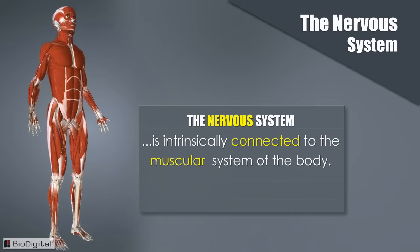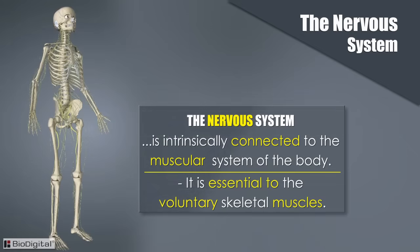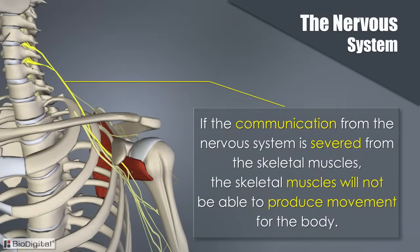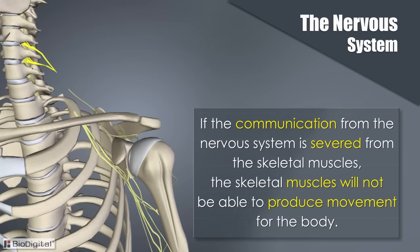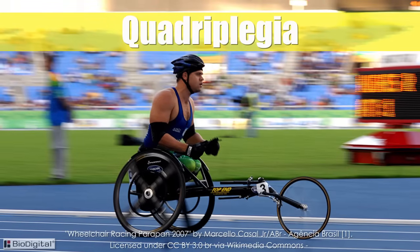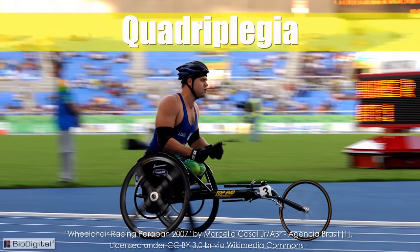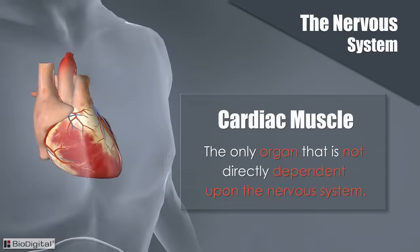While not technically part of the same system, the nervous system is intrinsically connected to the muscular system. It is essential to the voluntary skeletal muscles — if communication from the nervous system is severed from the skeletal muscles, the skeletal muscles will not be able to produce movement, and the body enters a state of paralysis known as quadriplegia. The only organ not directly dependent on the nervous system is the cardiac or heart muscle.